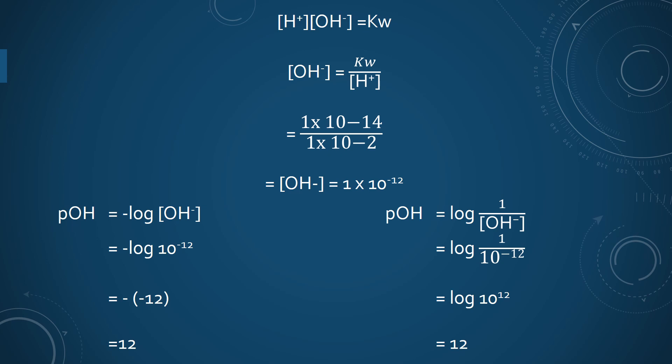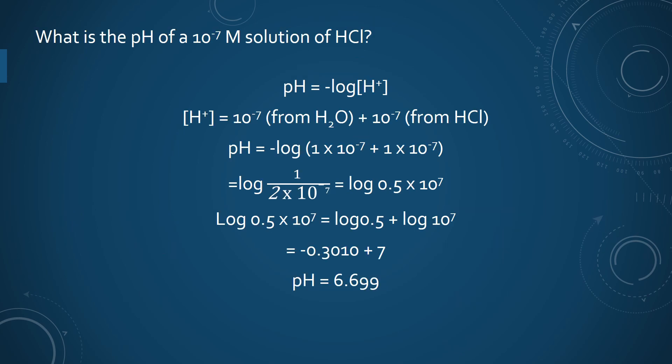This was for a strong inorganic acid at higher concentration. For the same strong inorganic acid at low concentration — suppose if the concentration of HCl is 10⁻⁷ molar — then for pH calculation, we also have to consider the hydrogen ion contributed by the ionization of water. So pH equals the negative logarithm of the total hydrogen ion concentration, which includes 10⁻⁷ from water and 10⁻⁷ from HCl. The pH is calculated as 6.699.